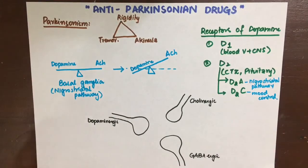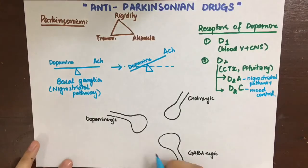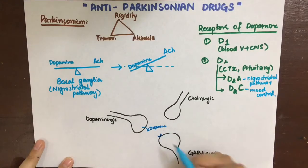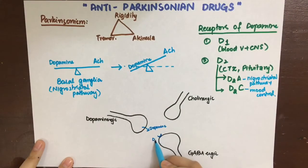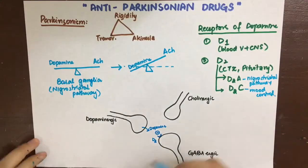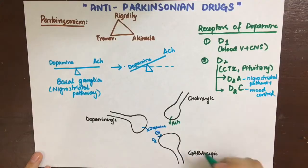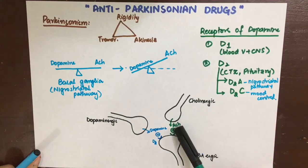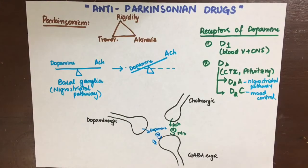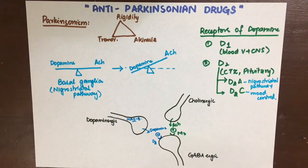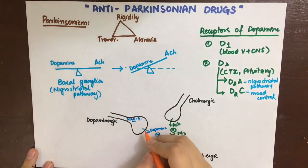The diagram shows three neurons: cholinergic, dopaminergic, and GABAergic. The GABAergic neuron is inhibitory. Dopamine released by the dopaminergic neuron plays an excitatory role by inhibiting this inhibitory neuron. Acetylcholine from the cholinergic neuron acts on the M3 receptor, which is Gs-coupled and stimulatory, stimulating the inhibitory neuron — leading to inhibition, which causes akinesia, muscle rigidity, and resting tremor. The resting tremor should be differentiated from intention tremor, a manifestation of cerebellar disorders.